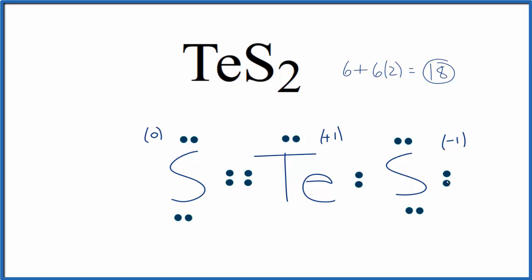So if we move these two electrons and form another double bond, that means the formal charges will be zero. And the tellurium has more than eight valence electrons, but that's okay, it can have an expanded octet. So this is a better Lewis structure for TeS2, two double bonds.